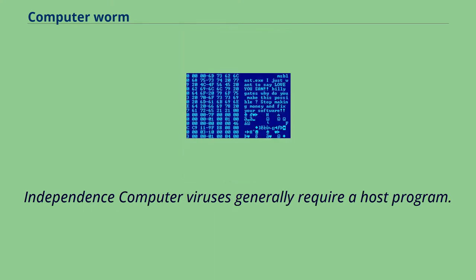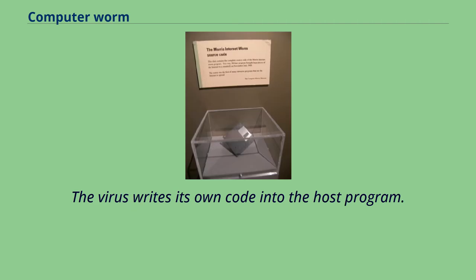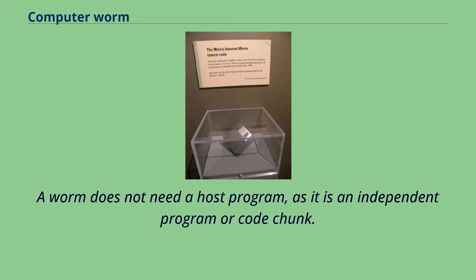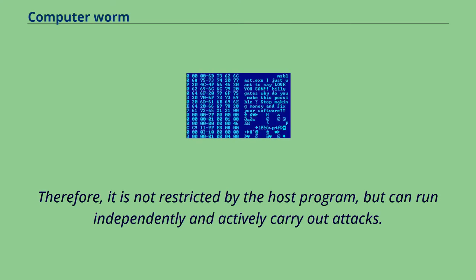Independence: computer viruses generally require a host program — the virus writes its own code into the host program, and when the program runs, the written virus program is executed first, causing infection and damage. A worm does not need a host program, as it is an independent program or code chunk. Therefore, it is not restricted by the host program, but can run independently and actively carry out attacks.